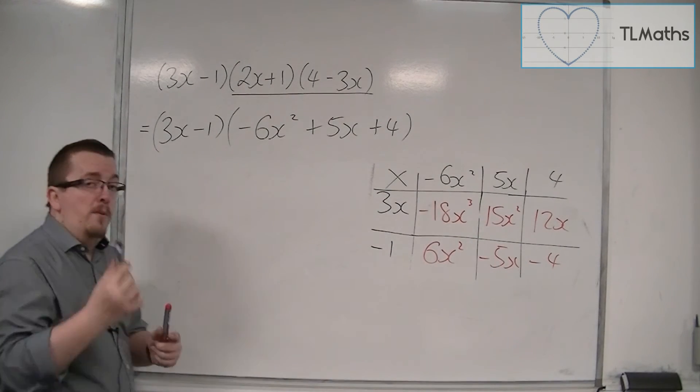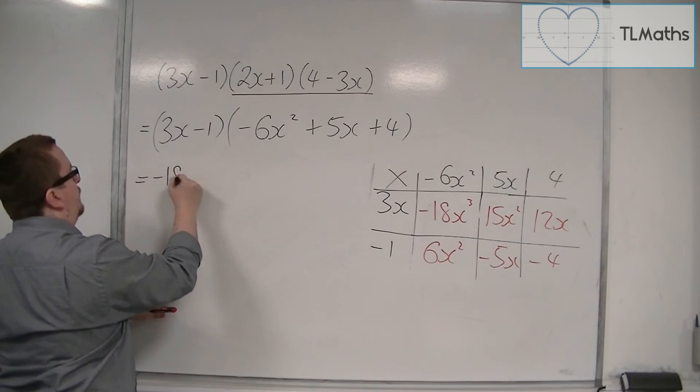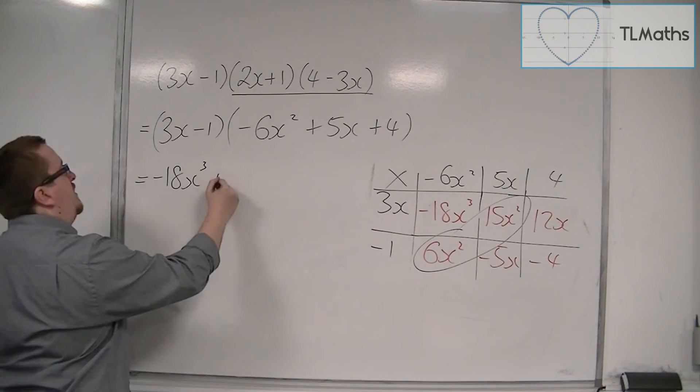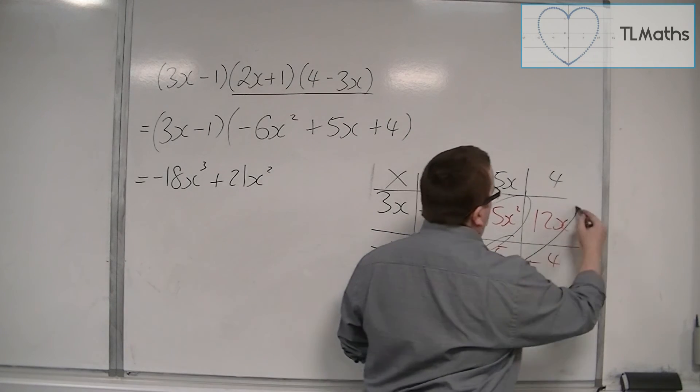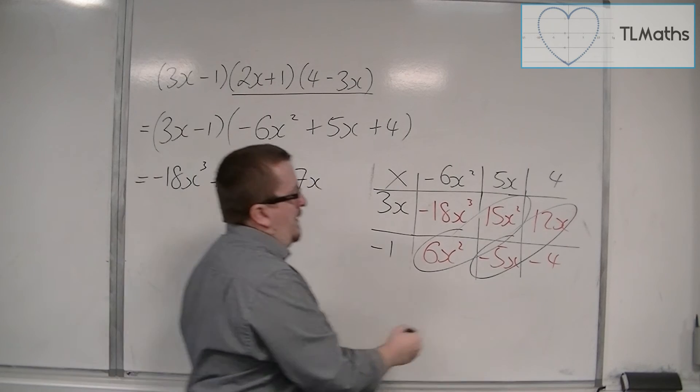Okay, so from there we can see that we've got minus 18x cubed. We've got 6x squared and 15x squared, so 21x squared. We've got minus 5x and 12x, so that makes 7x. And then finally we've got the minus 4.